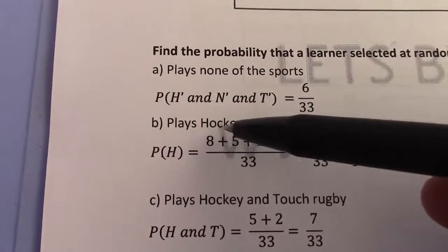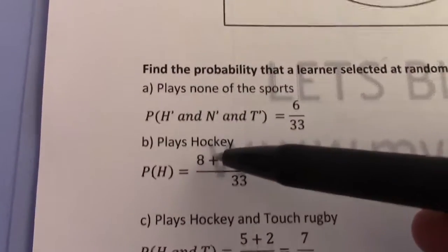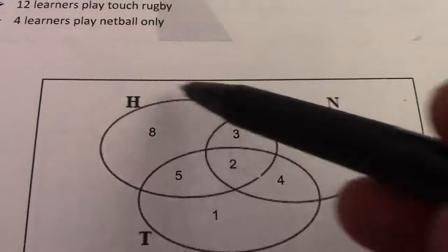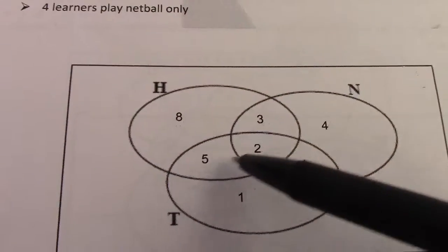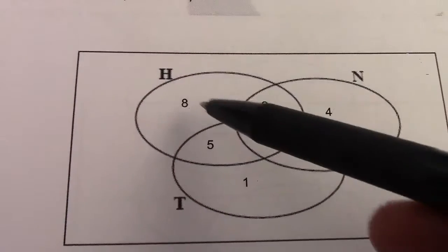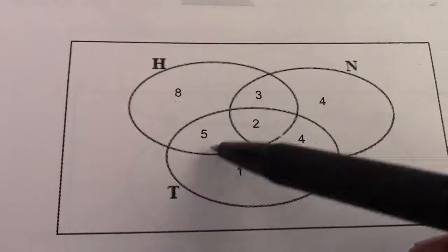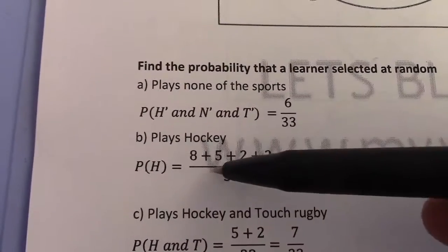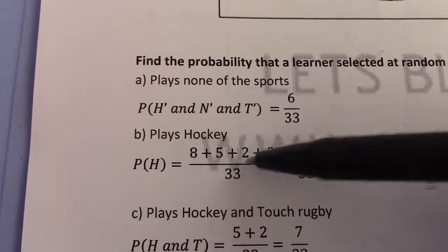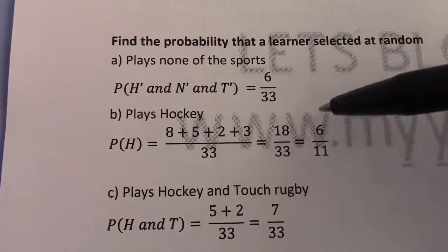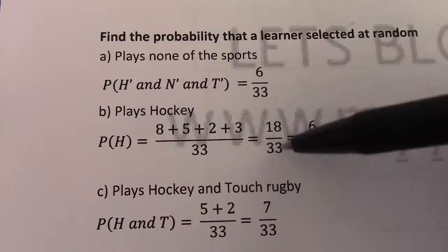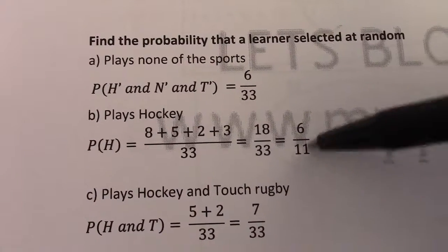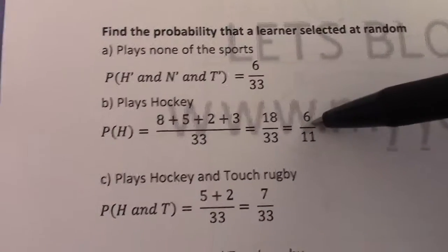Probability that the learner plays hockey — we want everything in circle H. So it's 8 plus 5 plus 2 plus 3, which gives me 18 over 33. A fraction must always be written in its simplest form.